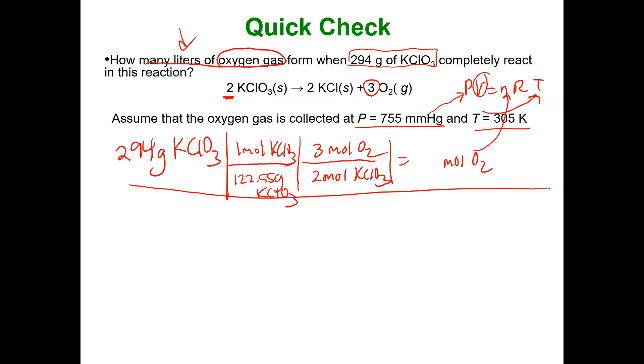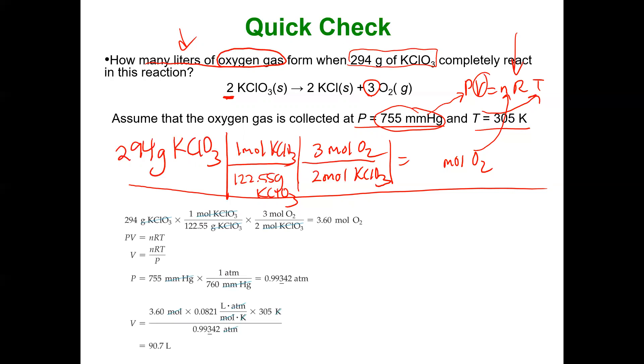Now don't forget to change this 755 millimeters of mercury into atmospheres. And that's because remember your R constant is in units of liter atmosphere per Kelvin mole. So when we do this, this is what we get. 294 grams of potassium chlorate converts to 3.60 moles of O2.